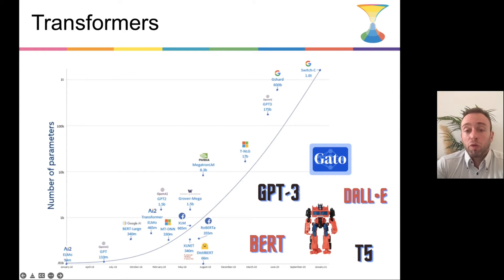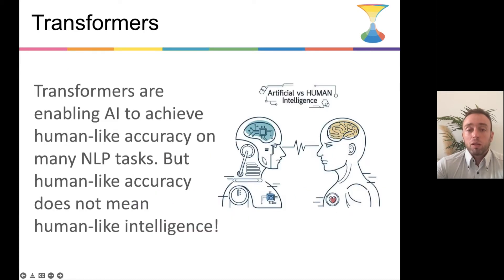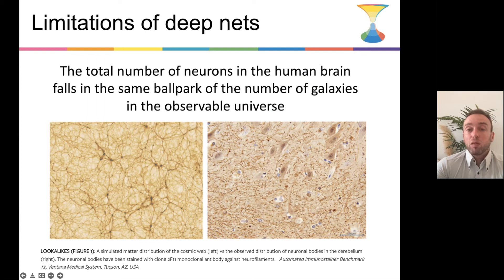You may be wondering why we need a common sense knowledge base since we have transformers. They have already achieved human-like accuracy on many NLP tasks, but human-like accuracy doesn't mean human-like intelligence. Transformers, despite being very good for classification, still have a lot of limitations. In fact, we may still be light years away from emulating the structure of the human brain, given that it's in the same ballpark as the number of galaxies in the observable universe.